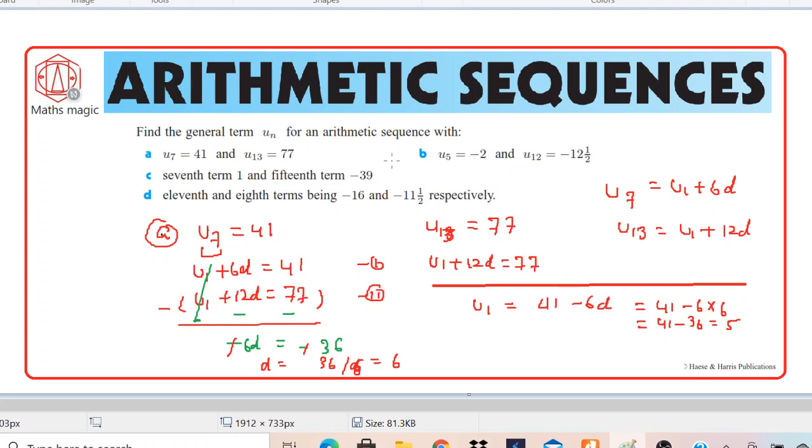Now we have to write the general equation of this sequence. So let me clear this place so that I can write it. You know that the general formula for the nth term of the arithmetic sequence is Un equals U1 plus n minus 1 times D. Over here, we just need to replace U1 and D. So U1 we got 5, we don't need to change anything with n minus 1, and D we got 6.